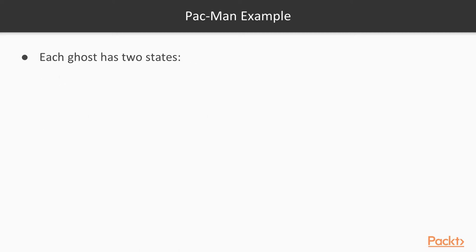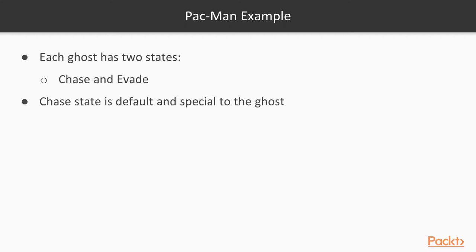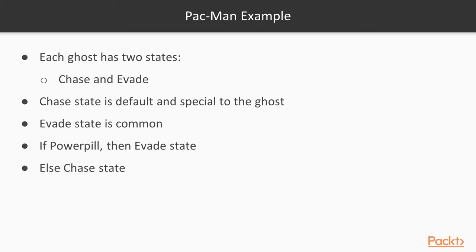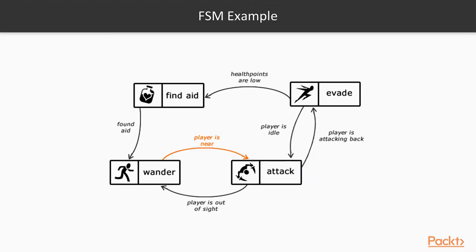Let's consider a simple well-known example to understand better: the Pacman example. Each ghost has two states, chase and evade. Ghosts are always in chase state unless the user gets a power pill. Then all the ghosts go into evade state until the power pill time ends.